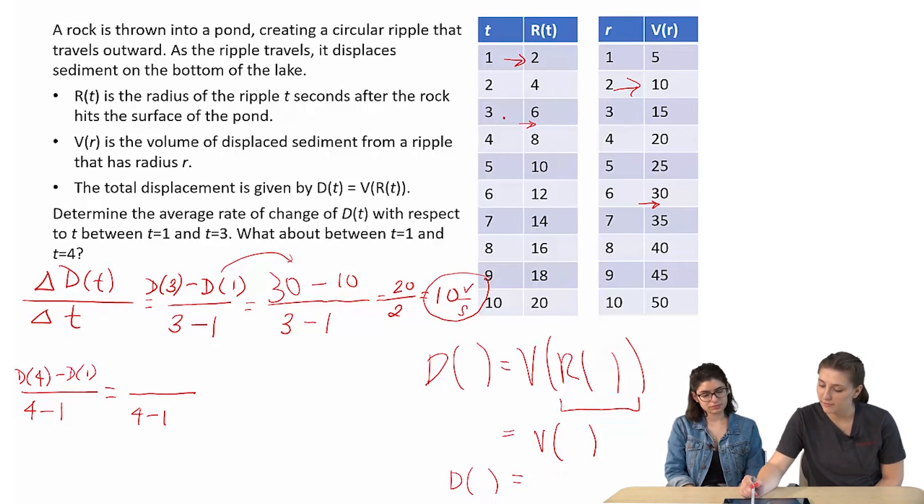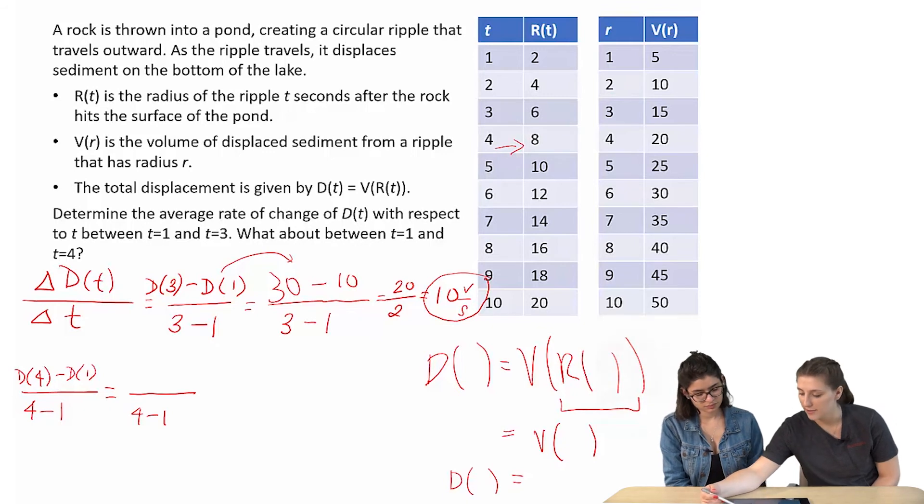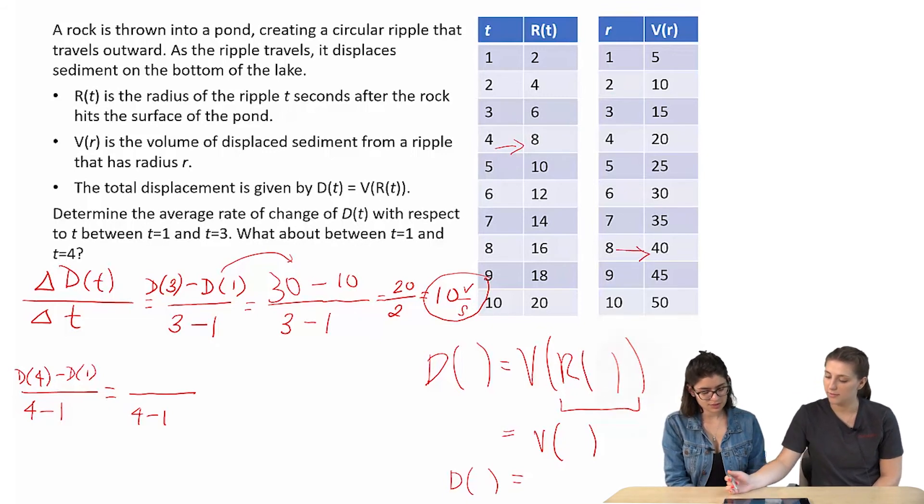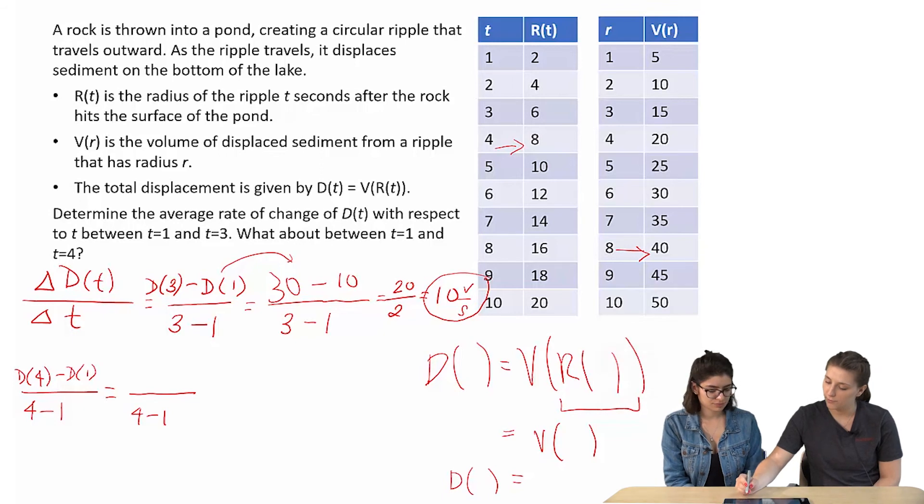Okay. So I would start in this column. I'd find 4. So I get 8. And then I go to 8 in this column. Exactly. So your final answer should be? 40. So D(4) is 40.